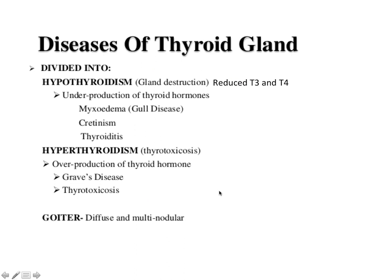Now diseases associated with the thyroid gland. They can be divided into three parts. First is hypothyroidism — that is reduced T3 and T4 production — with three forms: myxedema, cretinism, and thyroiditis. Second is hyperthyroidism, that is overproduction of thyroid hormones, due to Graves disease or thyrotoxicosis. Third is goiter, which is also a thyroid-related disease.